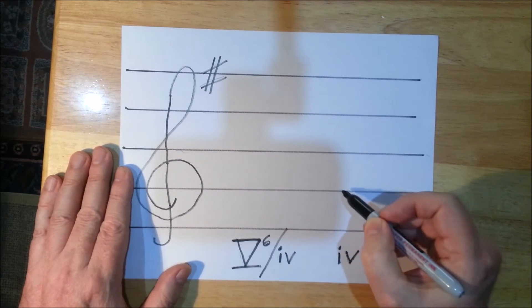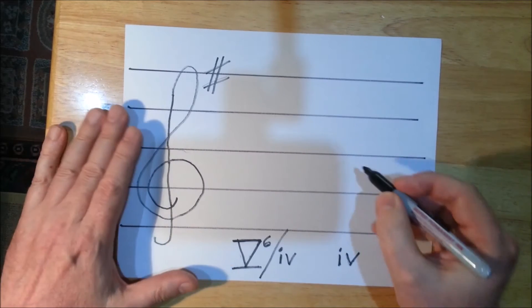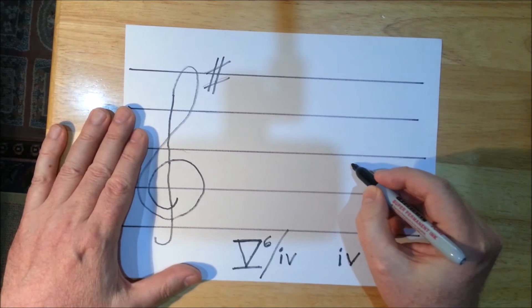So one, two, three, four. So the four chord in E minor is an A minor chord.